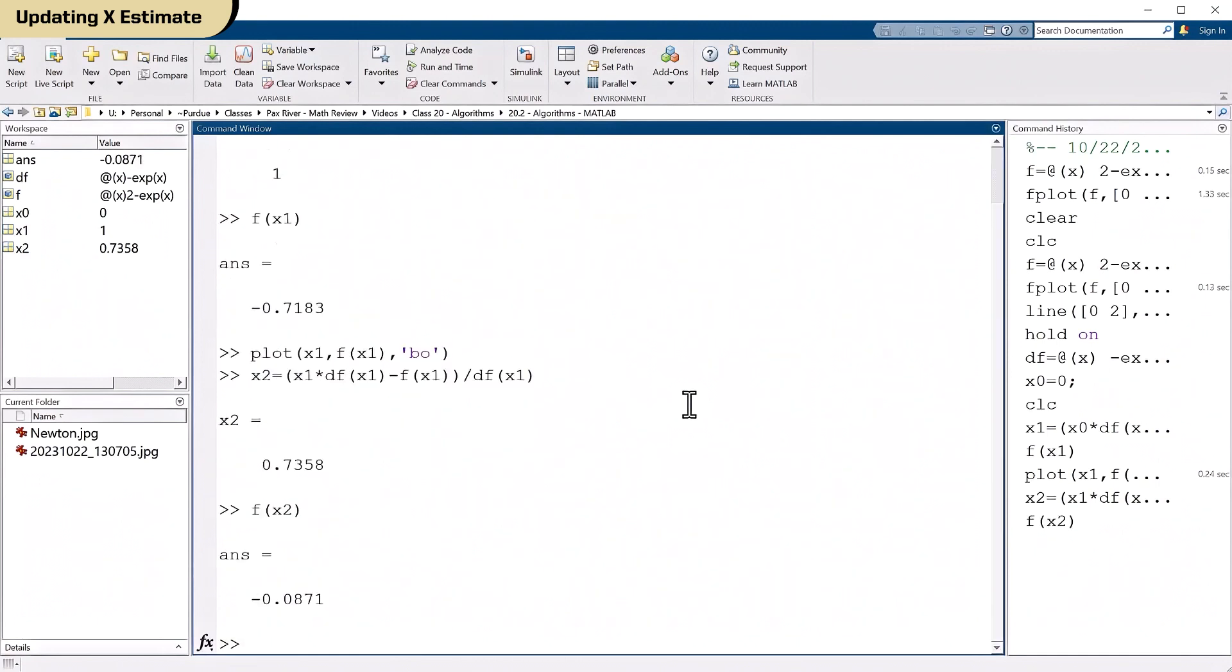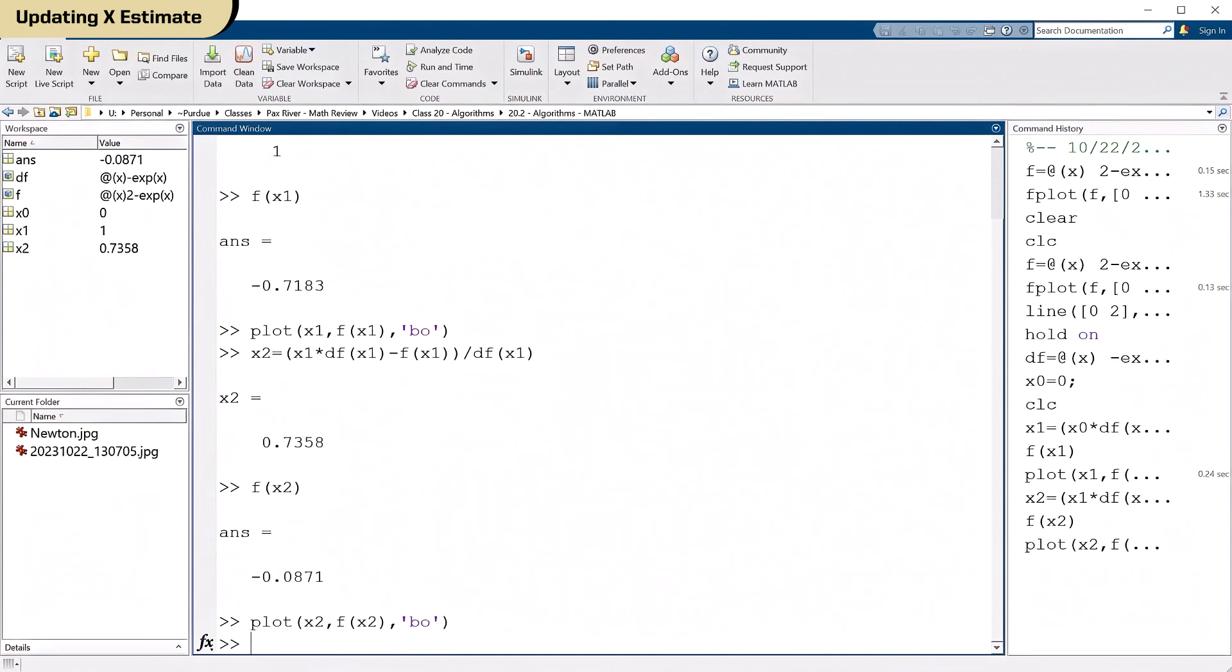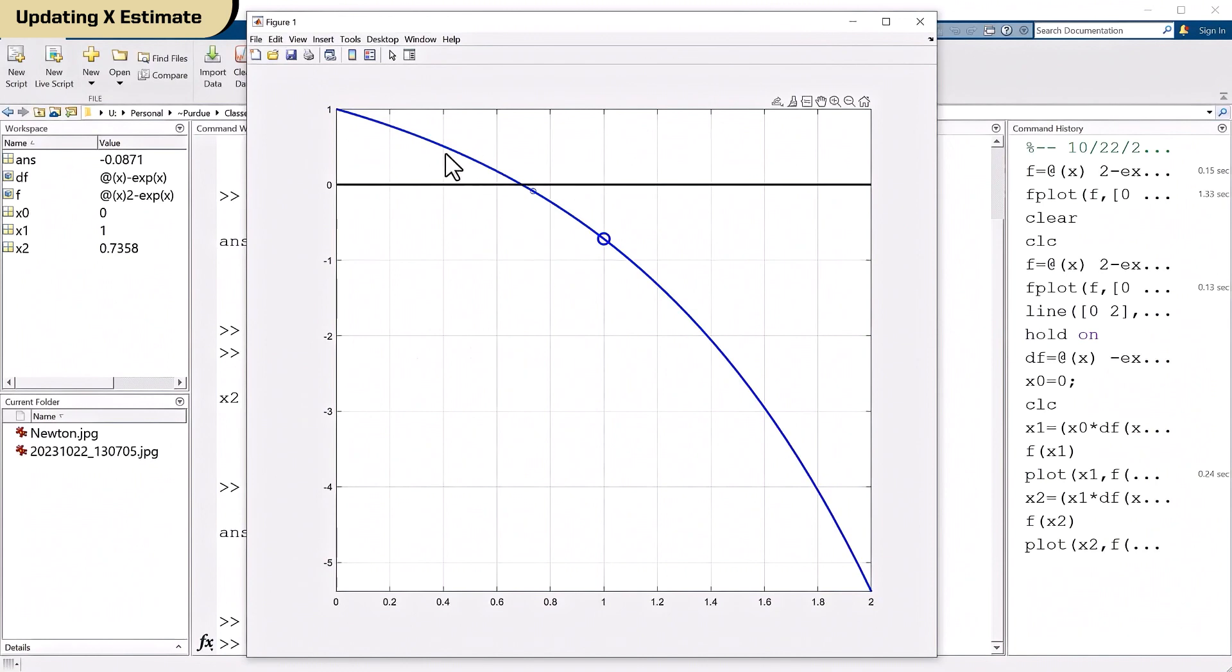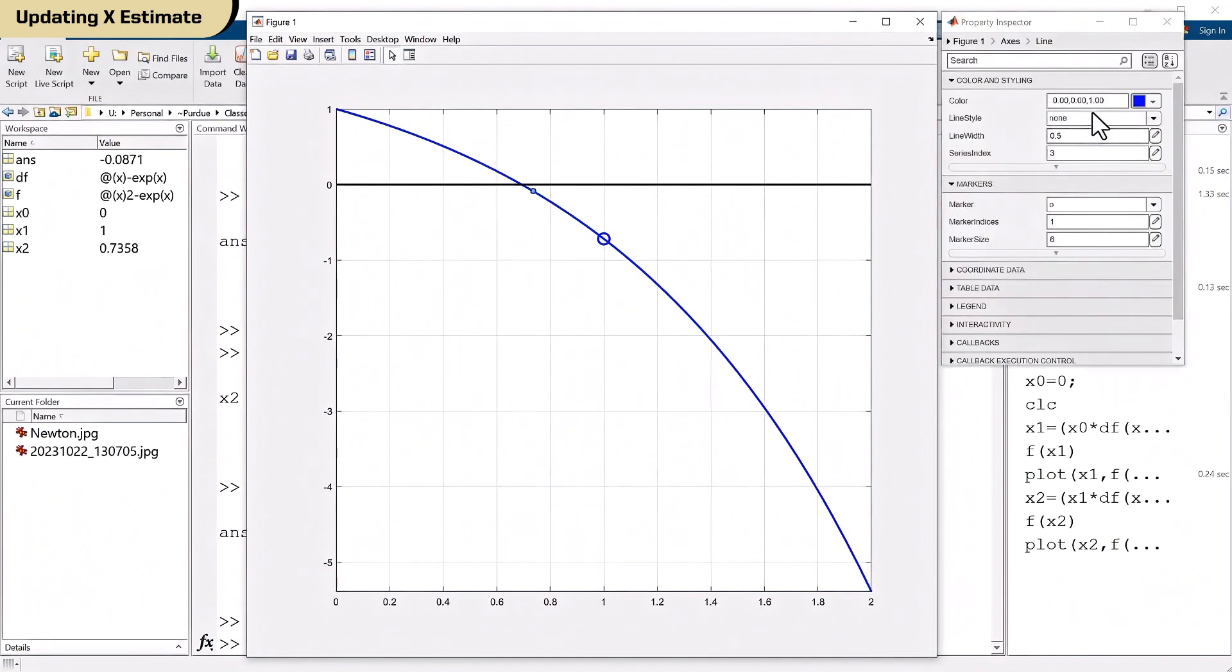Well, what's f of x2? Oh, look at that. There's a 0.0 something. Now it's negative. So I'm still to the right hand side of the root. But that's okay. I'm a lot closer. So let's just index this as well.